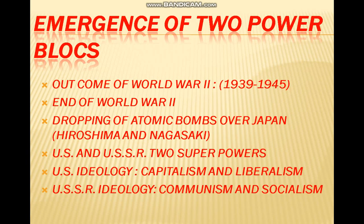Greetings everybody. In Class 12, we will be explaining the second topic of Chapter 1, that is the emergence of two superpowers or two power blocks. With the end of the Second World War in 1945, after the dropping of atomic bombs by the US on Japan's Hiroshima and Nagasaki, the Second World War ended, and the US and USSR became two superpowers.